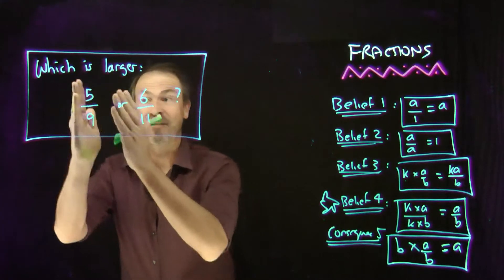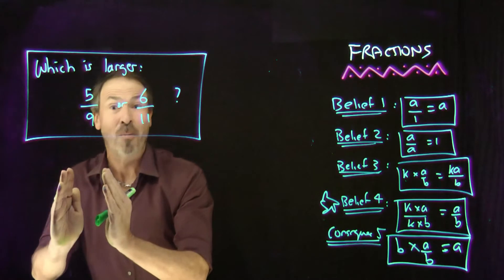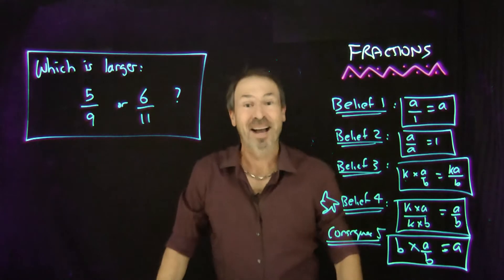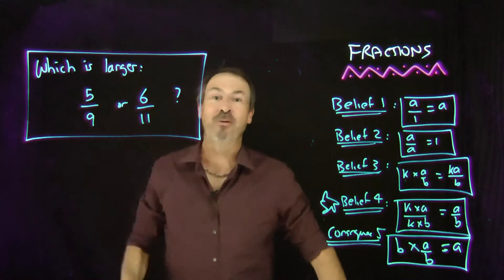Is 6 elevenths more pie per student than 5 ninths? Or is 5 ninths more pie per student than 6 elevenths? How can we tell? It's hard. It's actually hard to tell. Because these fractions look very, very different.